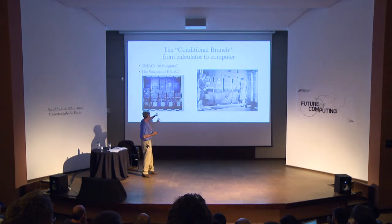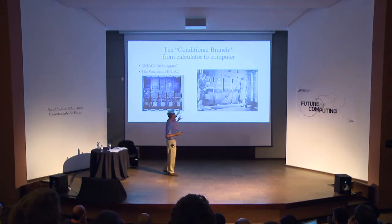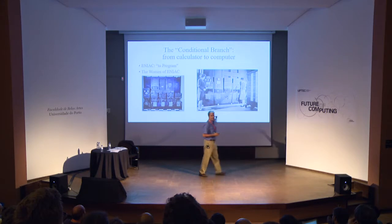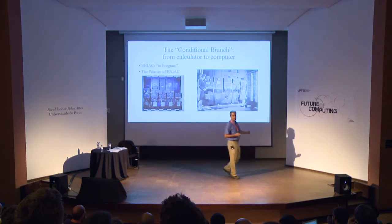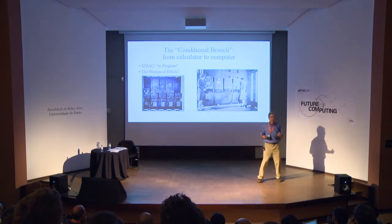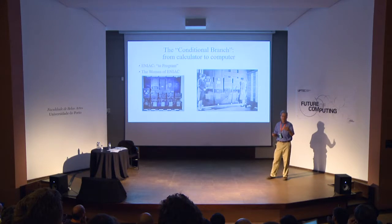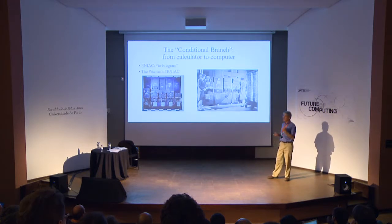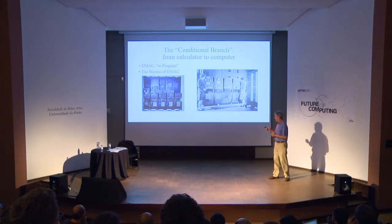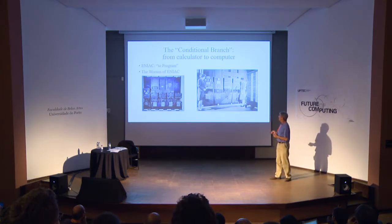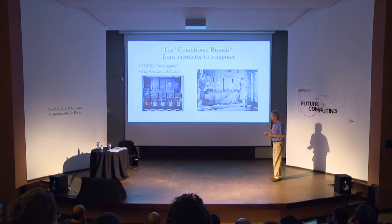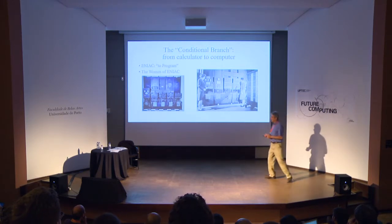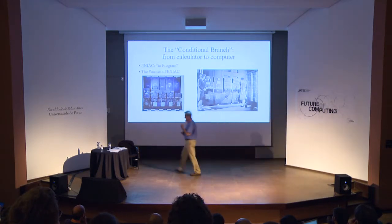ENIAC was also used to design a hydrogen bomb, later done at Oak Ridge National Laboratory with supercomputers. It had general-purpose capability even though built for a specific purpose. With 18,000 vacuum tubes it did have reliability issues, but once kept running it became very reliable and worked right into the 1950s. That's where I'd like to begin the history.